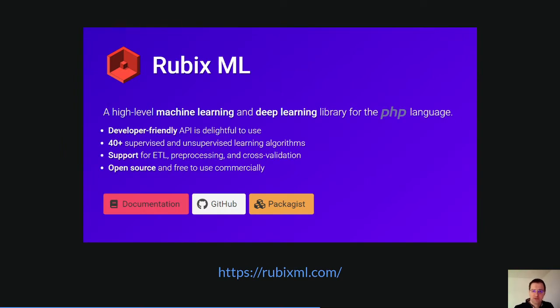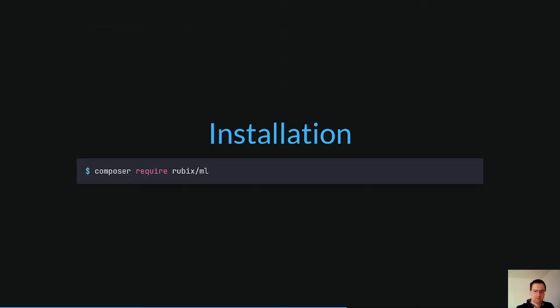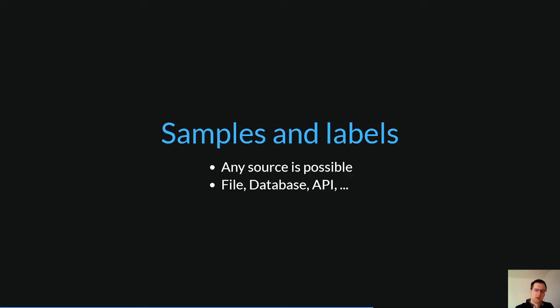RubixML is a high-level machine learning and deep learning library for PHP. To install RubixML, run this composer command. For the training process, it is not important where the data comes from. You can use a file, a database, or an external API. The only important thing is that this data is mapped correctly into a proper array.